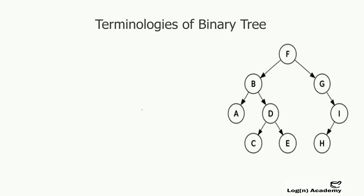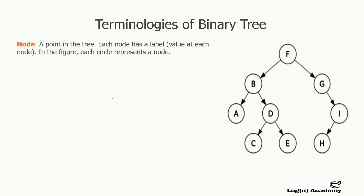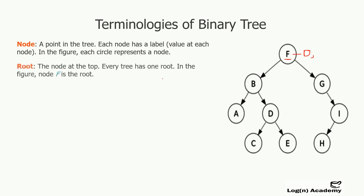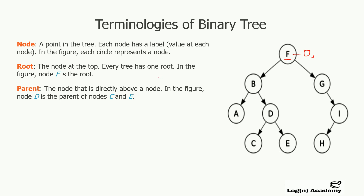Now let's review the terminologies of binary trees. A node is a point in a tree; each node has a label or value. In the figure, each circle represents a node containing a value — it can be numeric, an object, or anything. The root is the node at the top; every tree has one root. In the figure, F is the root node. A parent is the node directly above another node — for example, node D is the parent of nodes C and E.